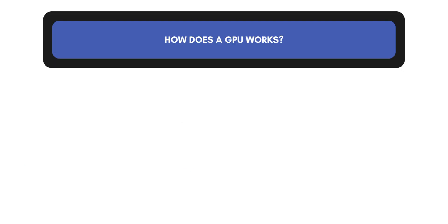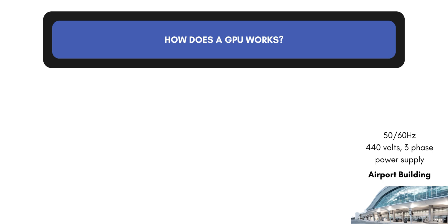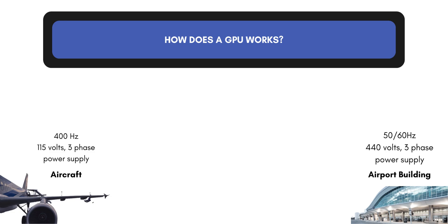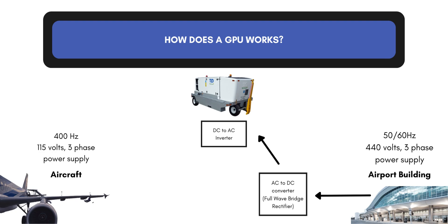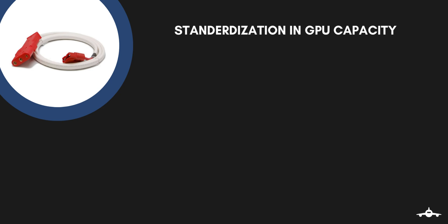The airport building has a power supply of 440 volts, 3-phase, 50 or 60 Hz. The aircraft requires 400 Hz, 115 volts, 3-phase power supply. To achieve this, utility power supply conversions are employed in the ground power unit. Power supply from the building is transferred to an analog-to-digital converter, which is a full wave bridge rectifier. It is then processed into a digital-to-analog inverter where the frequency is transformed. Lastly, the power supply is transferred to a step-down transformer and finally supplied to the ground power unit, after which it is transmitted to the aircraft.